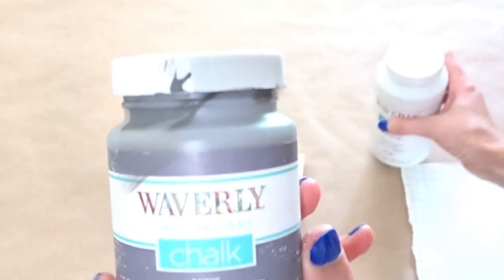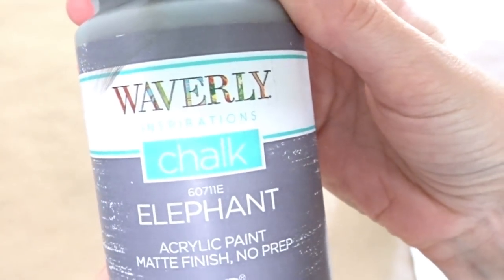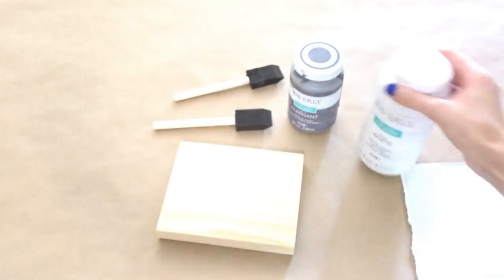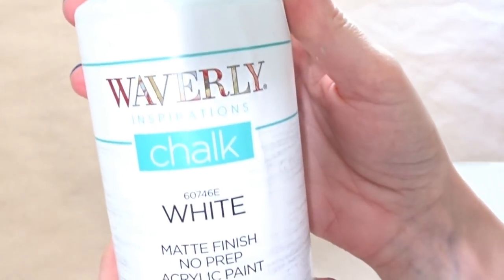The first one I'm going to be using is this chalk paint in the color elephant. So that's going to be my base color. And then on top of that I'm going to layer Waverly chalk paint in just the color white.